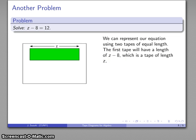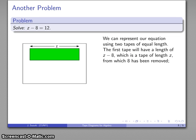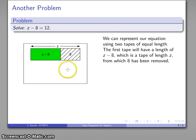And so maybe I'll start with a tape of length z. Don't know what it is. And then minus, subtract a bit of length 8. So I'll hack that portion off. And here's my 8, gotten rid of it. What's left over? z take away 8.